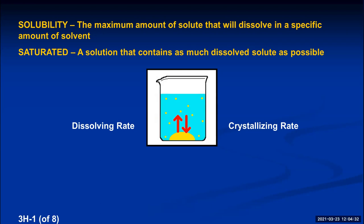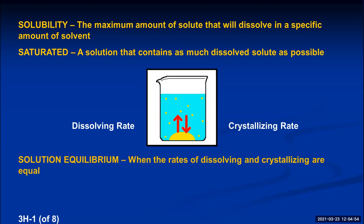This is what happens in your iced tea when you dump two teaspoons of sugar in — you stir and stir, and there's still a little lump at the bottom. The sugar is still dissolving, but it's dissolving at the exact same rate that it's crystallizing. Whenever you have a saturated solution, you have reached what's called solution equilibrium — when the rates of dissolving and crystallizing are equal. So any saturated solution you create is always in solution equilibrium.